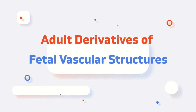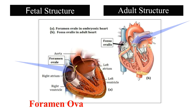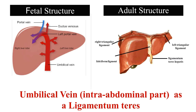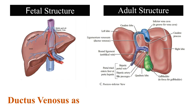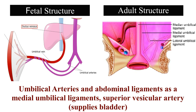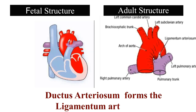Adult derivatives of fetal vascular structures. Over a period of months, these fetal vessels form non-functional ligaments and fetal structures persist as anatomic vestiges of the prenatal circulatory system. Foramen ovale forms the fossa ovalis. The umbilical vein (intra-abdominal part) becomes the ligamentum teres. Ductus venosus becomes the ligamentum venosum. Umbilical arteries form the medial umbilical ligaments and the superior vesicular artery, which supplies the bladder. Ductus arteriosus forms the ligamentum arteriosum.